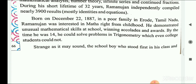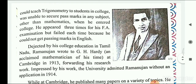Strange as it may sound, the school boy who stood first in his class and could teach trigonometry to college students was unable to secure pass marks in any subjects other than mathematics. He entered college and appeared three times for his FA exams but failed each time because he could not get passing marks in English. The boy who could teach trigonometry solutions to college students could not pass his own college exams in other subjects.